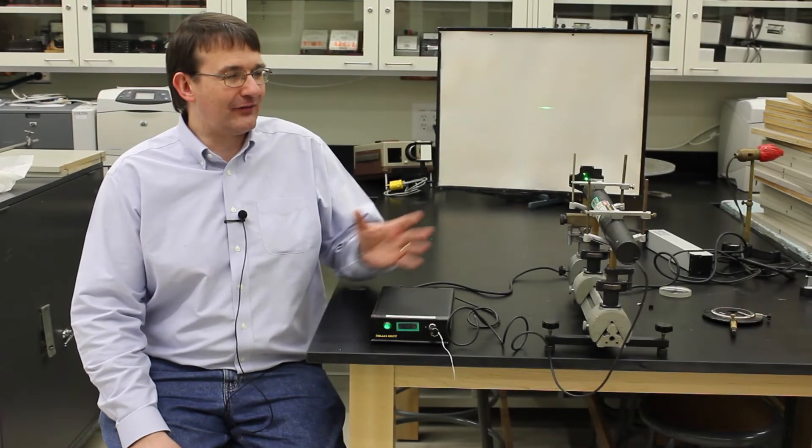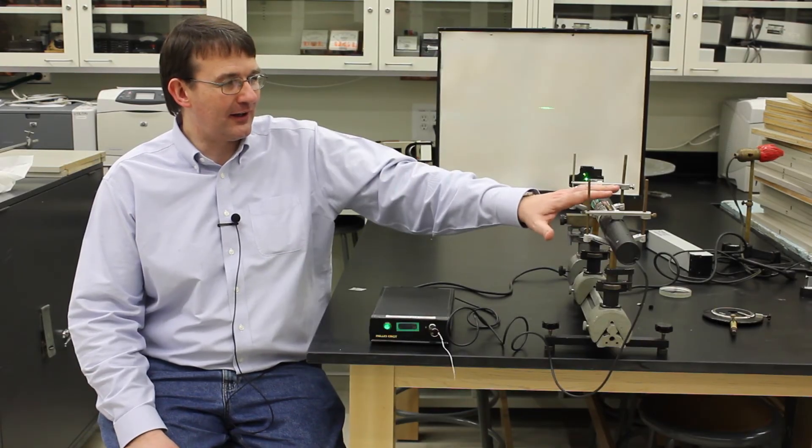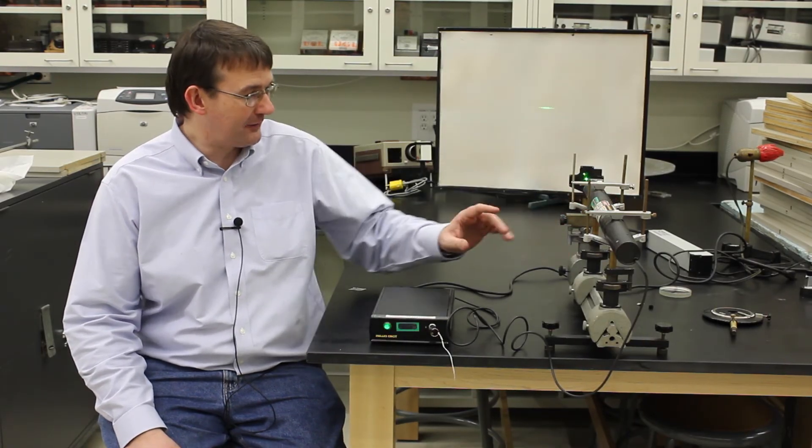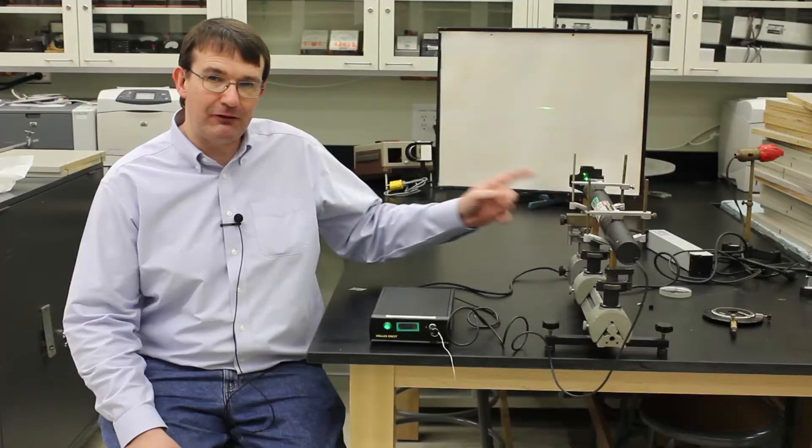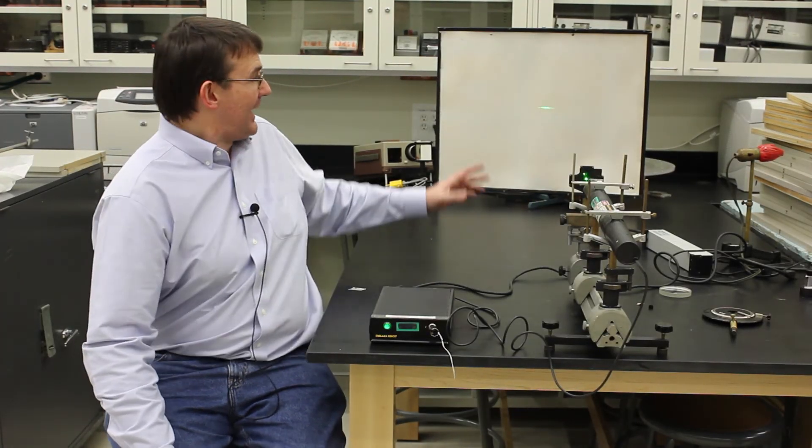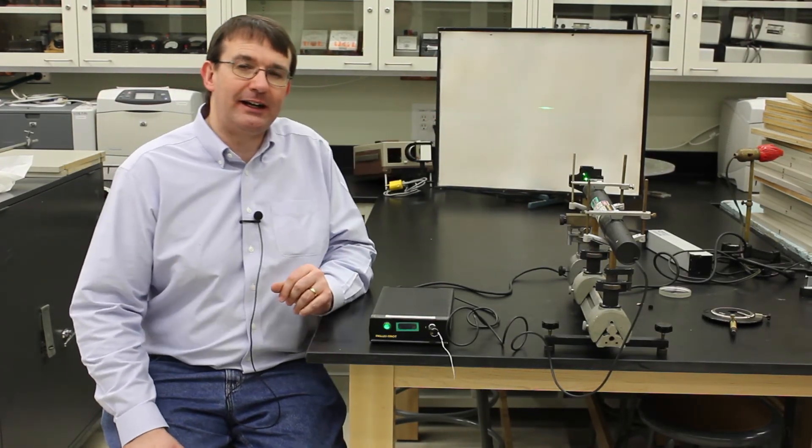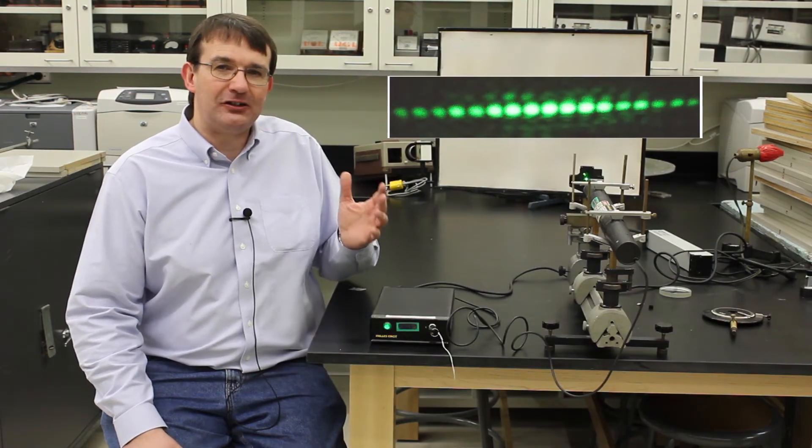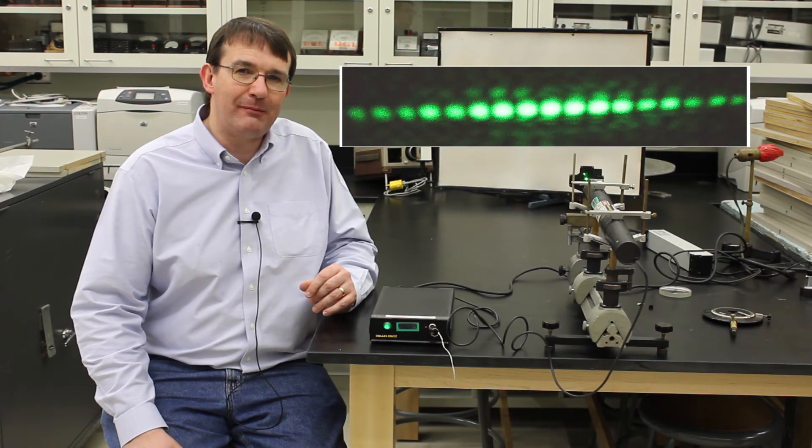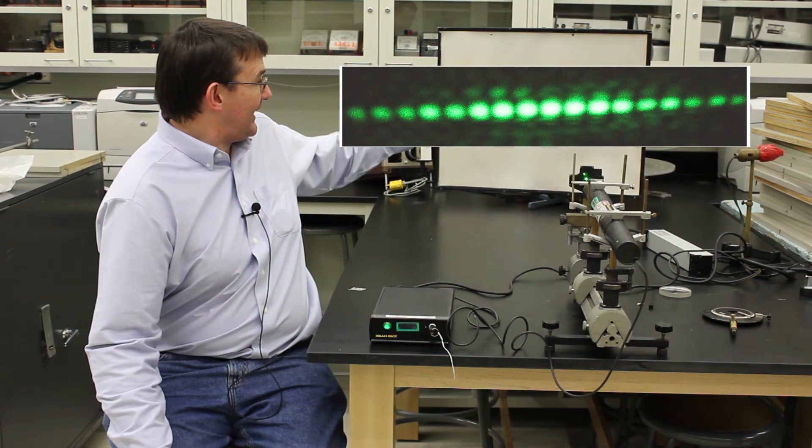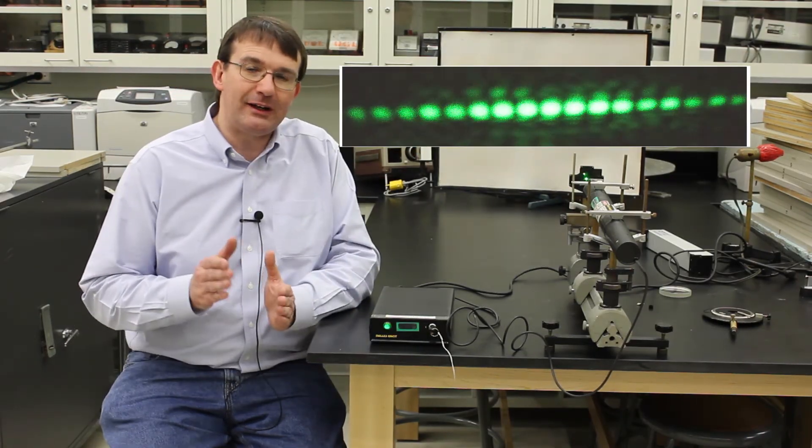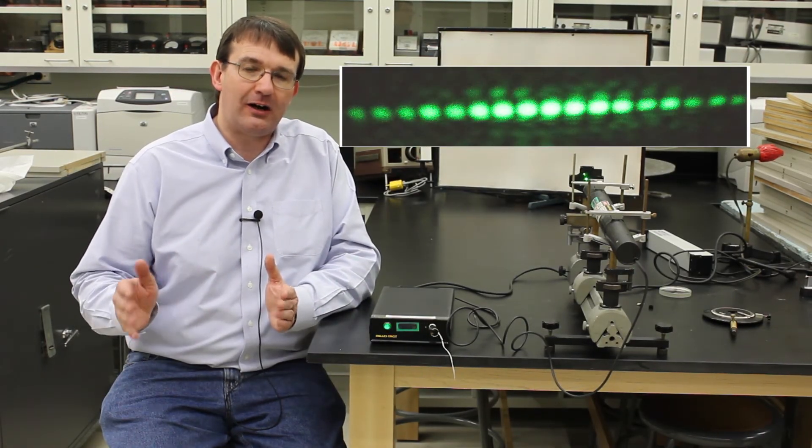Now we have the same setup again. We've got our laser which is our coherent light source, we have two narrow slits in front of it, and we've got the pattern projecting onto the screen. And just as we predicted from the math, what we're observing here is a series of equally spaced bright and dark fringes.